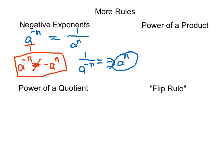Let's look at another rule: the power of a product. If we have a and b — two things being multiplied inside parentheses — and we raise that to a power of n, what we can do is distribute this n to both of them. This is the same as a to the n times b to the n. We're just distributing the exponent, so both factors of the product receive the new exponent of n.